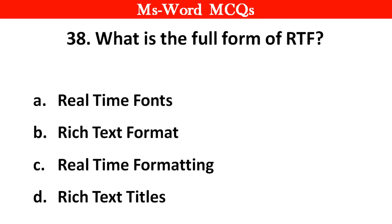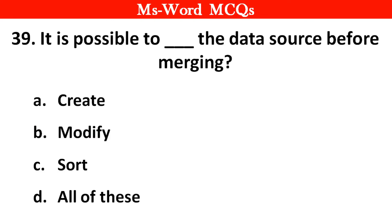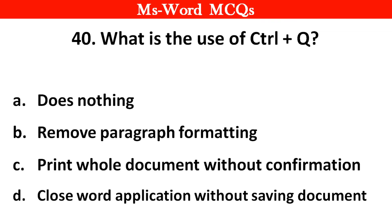Next question: What is the full form of RTF? Right answer is option B, Rich Text Format. Next question: It is possible to do the following to a data source before merging — options: A) create, B) modify, C) sort, D) all of these. Right answer is option D, all of these. Next question: What is the use of Ctrl + Q? Right answer is option B, remove paragraph formatting. Thank you.